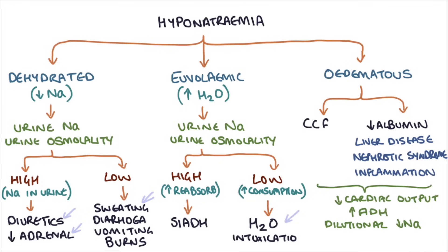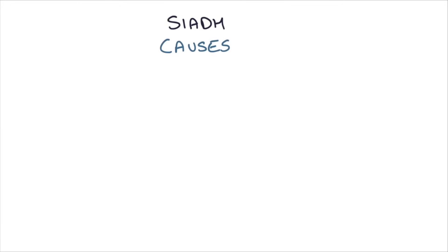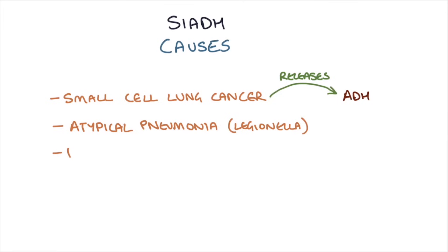A condition I want to talk a bit more about is SIADH. There's a huge number of causes of SIADH. It's worth remembering a few that will come up in exams and being aware there are loads of other causes. The ones to remember: small cell lung cancer, as the tumor produces and releases ADH itself; other chest conditions such as atypical pneumonia, particularly Legionella pneumonia; brain damage affecting the hypothalamus, particularly due to meningitis or subarachnoid hemorrhage; and drugs such as carbamazepine and SSRIs.